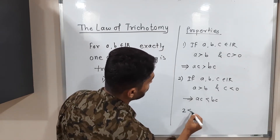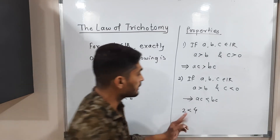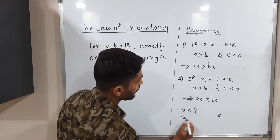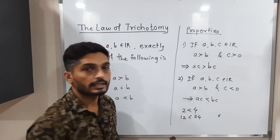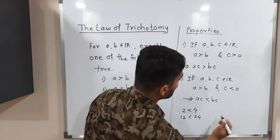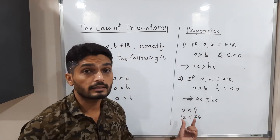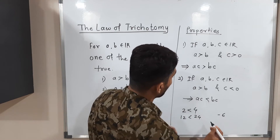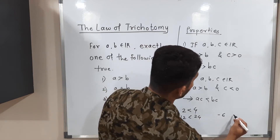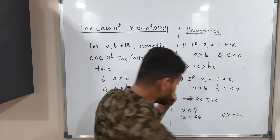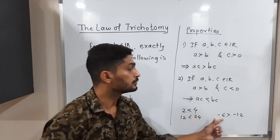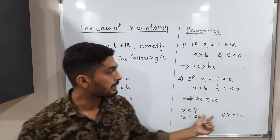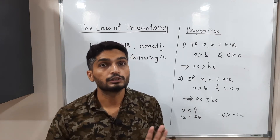For example, we know 2 < 4. If I multiply both sides by 6: 12 < 24 — same relation is maintained. But if I multiply both sides by −3: 2 × (−3) = −6 and 4 × (−3) = −12, so −6 > −12. The inequality changed. When multiplying by a positive number the inequality is maintained; when multiplying by a negative number the inequality reverses.